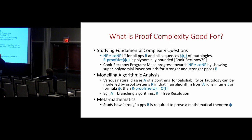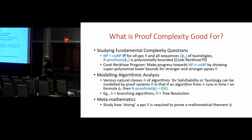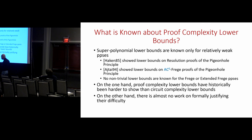The metamathematical perspective is relevant because we're interested in how hard proof complexity lower bounds are to prove. The mathematical theorems we're interested in are proof complexity lower bounds, and we'd like to know which propositional proof systems can prove those theorems. All three reasons for studying proof complexity are reasons for studying proof complexity lower bounds, and this metamathematical perspective will be useful for understanding what it means for a lower bound to be hard to prove. So what's known about proof complexity lower bounds?